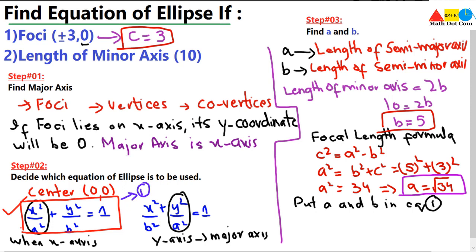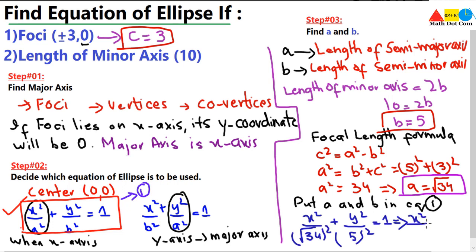Substituting into the equation: x²/(√34)² + y²/5² = 1, which simplifies to x²/34 + y²/25 = 1. This is the required equation of the ellipse, based on the given foci coordinates and the length of the minor axis. Thank you for watching.